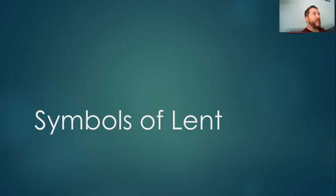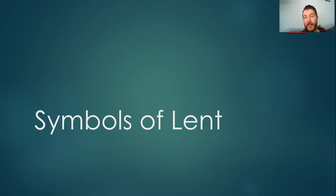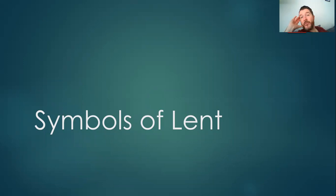I'm going to look at some of the symbols that we associate with Lent — some of the pictures, images, or objects that remind us of Lent and what happened during Lent. Now, Lent goes on for 40 days. Can you think about why that might be? It's because that's how long Jesus went into the desert when he was sent by God's Holy Spirit to go and pray before he began his ministry — before he began teaching and converting people to believe in God. So he went for 40 days.